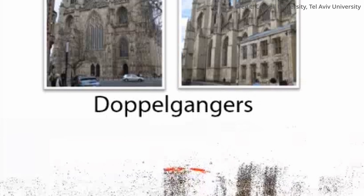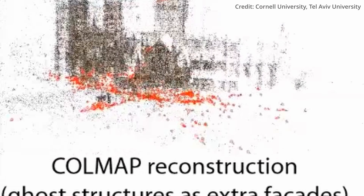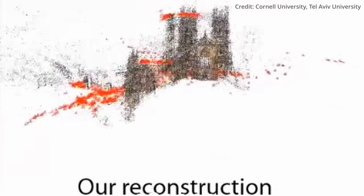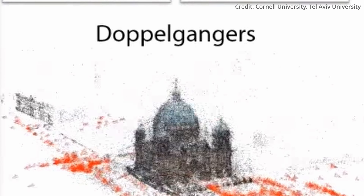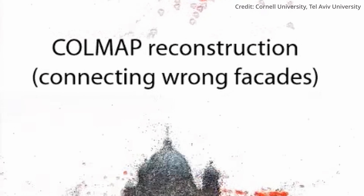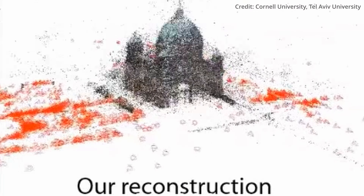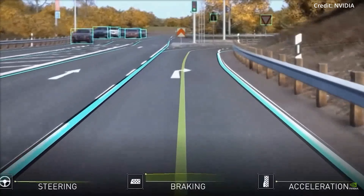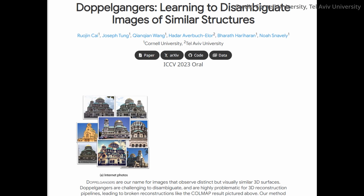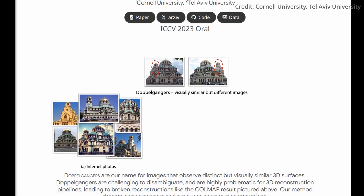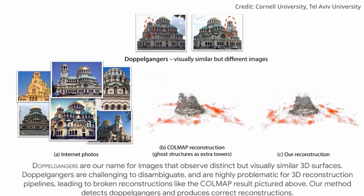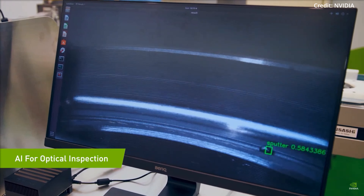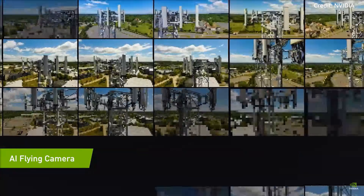The team also explored the utility of their method as a pre-processing filter for structure-from-motion pipelines like Colmap, demonstrating far-reaching applications in enhancing the reliability and precision of 3D reconstructions. The implications for the future of computer vision are monumental. From enhancing facial recognition systems to improving the navigation of autonomous vehicles in intricate environments, Doppelgangers brings a new level of nuance and accuracy, expanding the realm of what's possible in artificial intelligence with another layer of complexity and adaptability.